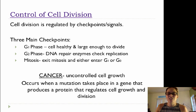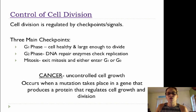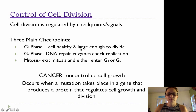Now what cancer is, is uncontrolled cell growth. That's when a mutation takes place in a gene that produces a protein that regulates cell growth and division. There are proteins and enzymes that regulate and check the cell cycle.